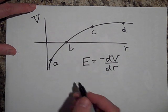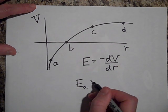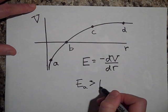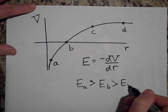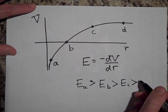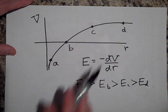So E at a is greater than E at b which is greater than E at c which is greater than E at d. E at d is almost zero.